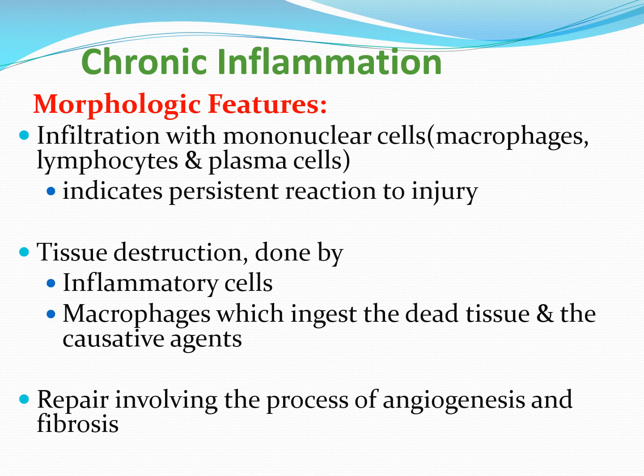The tissue destruction in chronic inflammation is caused by inflammatory cells, specifically phagocytes — the macrophages. They release lysosomal enzymes, reactive oxygen species, nitric oxide, and other mediators that digest dead tissue and destroy microbial agents, but in doing so they may cause tissue injury. The repair that follows takes place by fibrosis and angiogenesis: fibroblasts proliferate and deposit connective tissue, and new blood vessels are formed in the healing tissue — a hallmark of healing tissue.